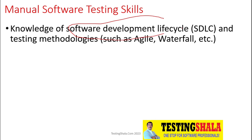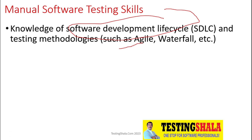The first skill you should know when you want to become a manual tester is you should have a good understanding of the software development lifecycle (SDLC) and various testing methodologies — it could be Agile or Waterfall methodologies. These days, most people use Agile testing methodology.